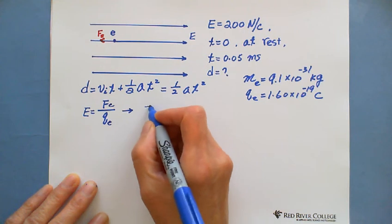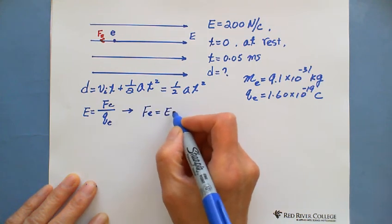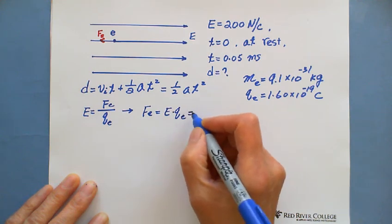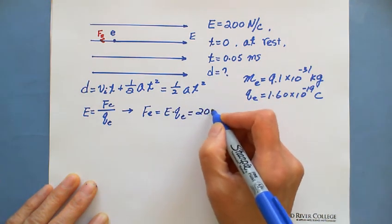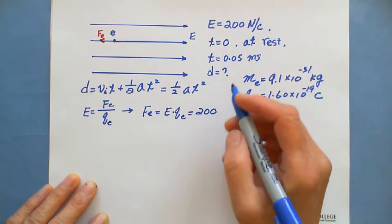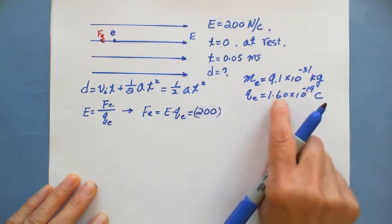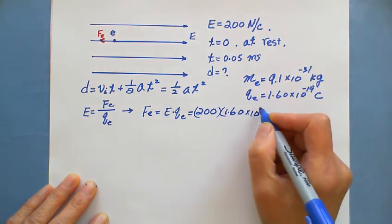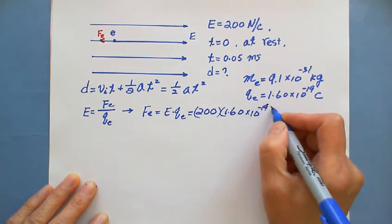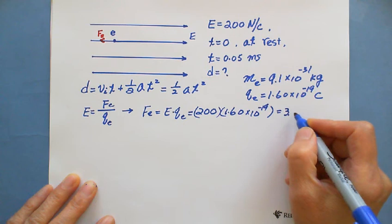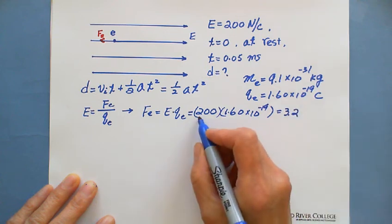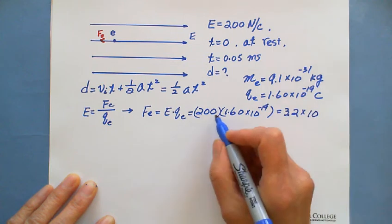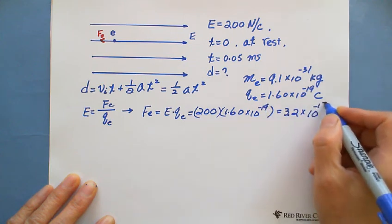So the force Fe equals E times Q, the cross multiplication here. E equals 200 Newton per Coulomb, and multiply Q, which is 1.60 times 10 to the negative 19 Coulomb. We got 3.2, because 2 times 1.6 is 3.2, and 10 goes to the exponent negative 17 Newton.